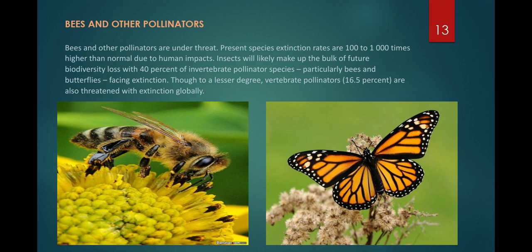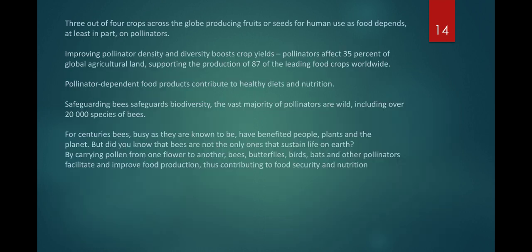Bees and other pollinators are under threat. Present species extinction rates are 100 to 1,000 times higher than normal due to human impact. Insects will likely make up the bulk of future biodiversity loss, with 40% of invertebrate pollinator species — particularly bees and butterflies — facing extinction. Vertebrate pollinators are also threatened with extinction globally at about 16.5%. Three out of four crops across the globe that produce fruit or seeds for human use as food depend, at least in part, on pollinators such as butterflies, bees, wasps, and beetles.